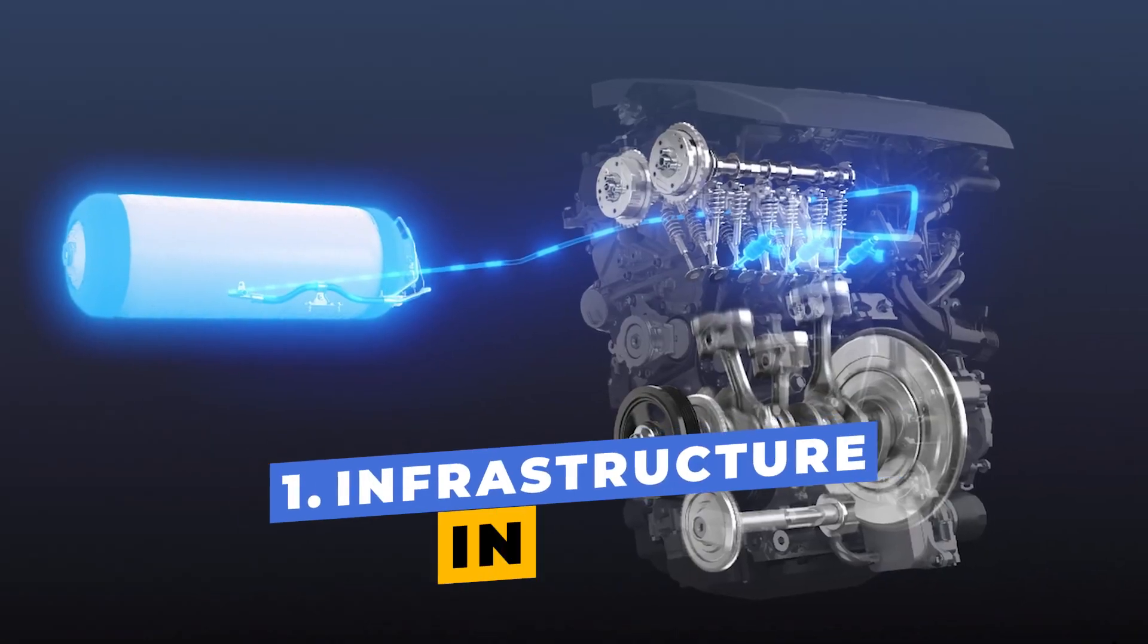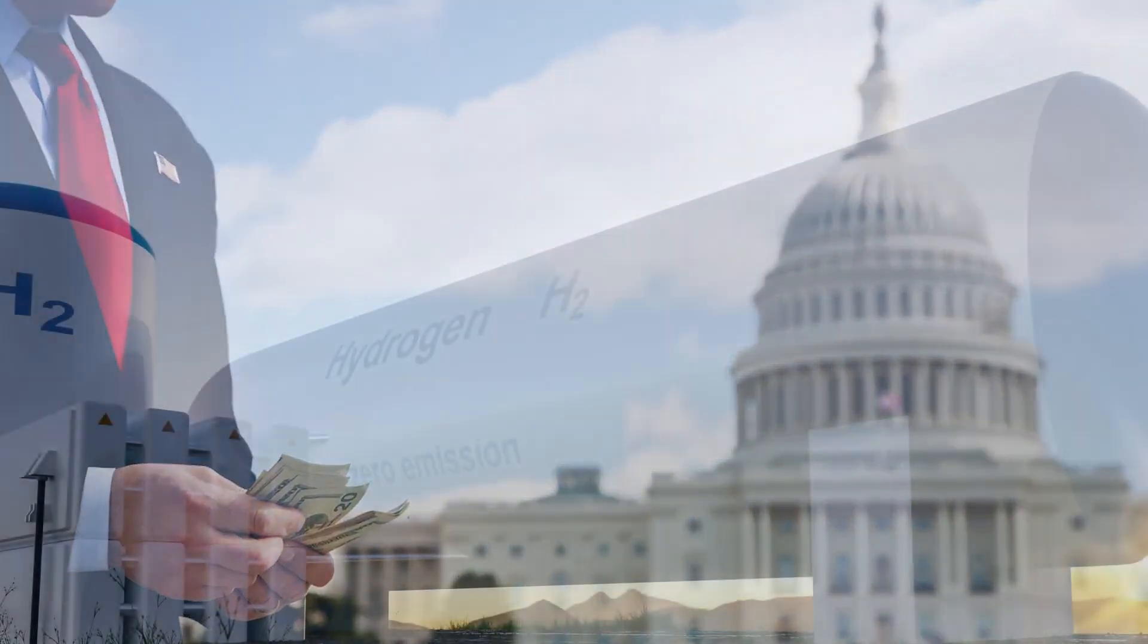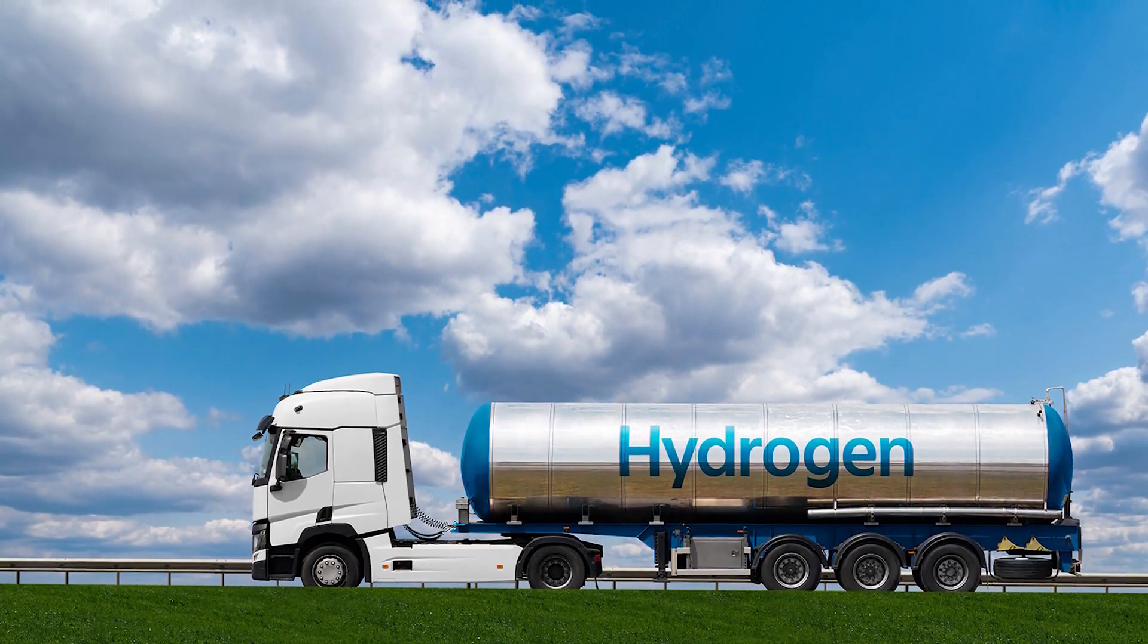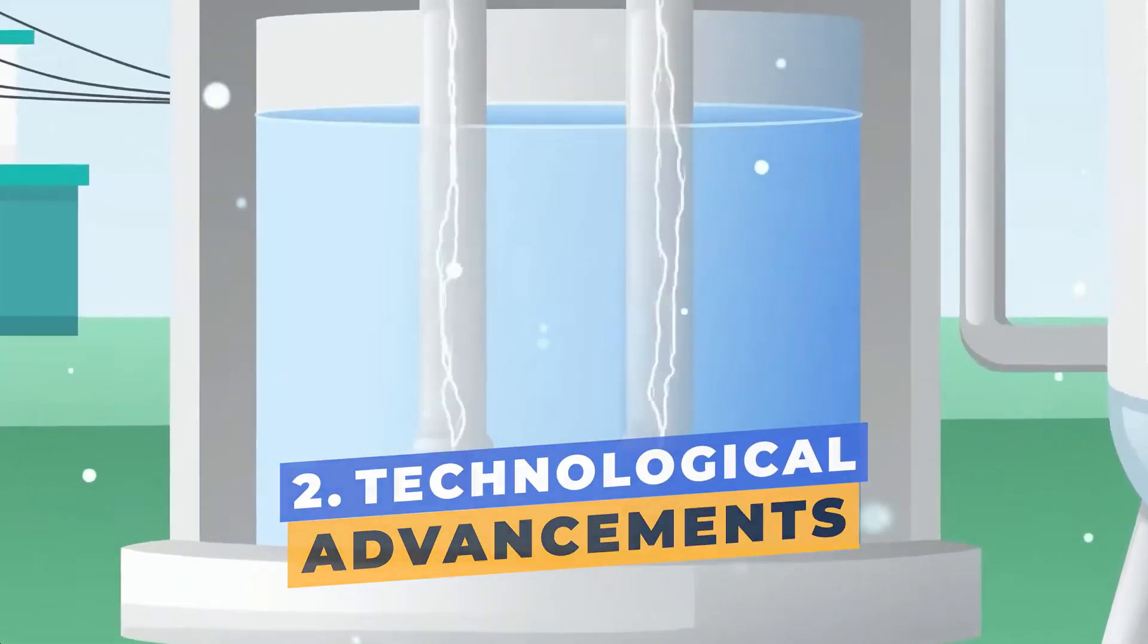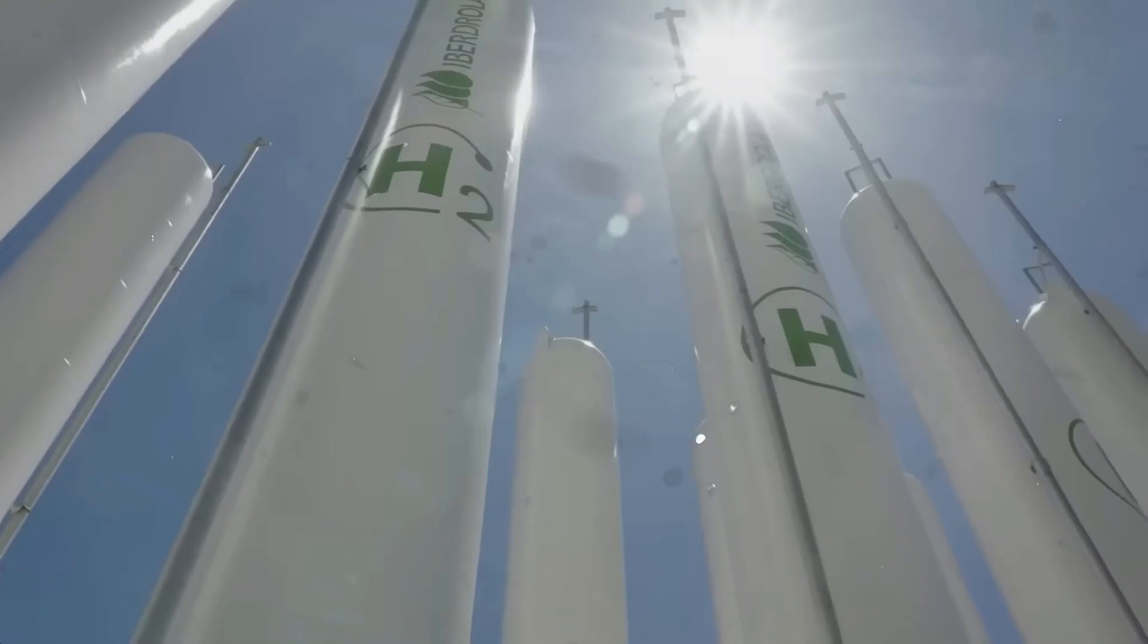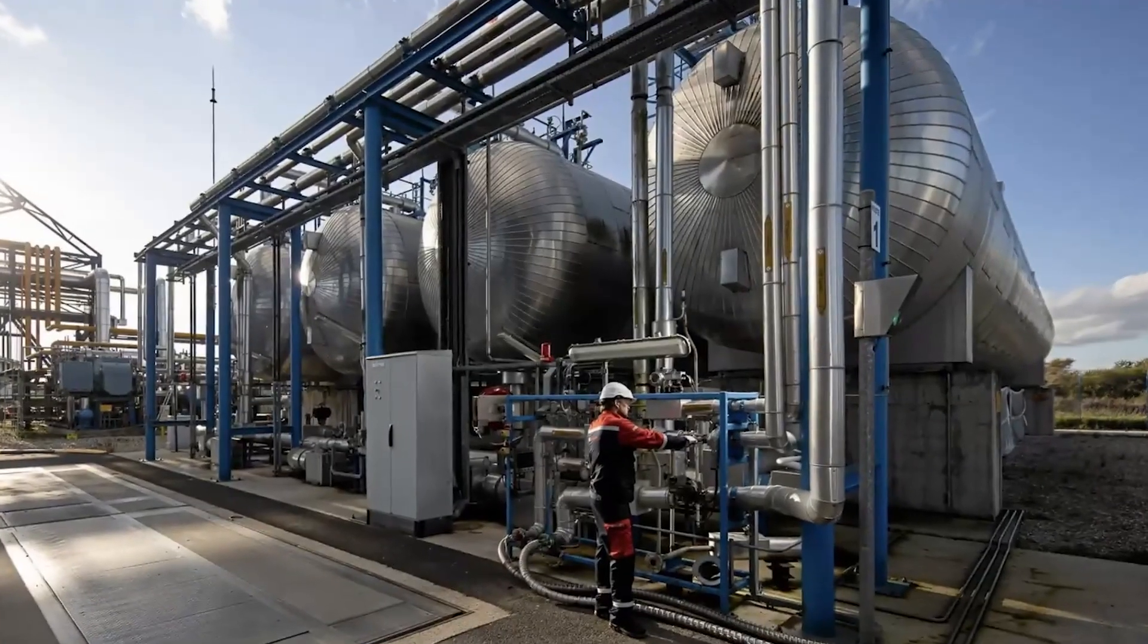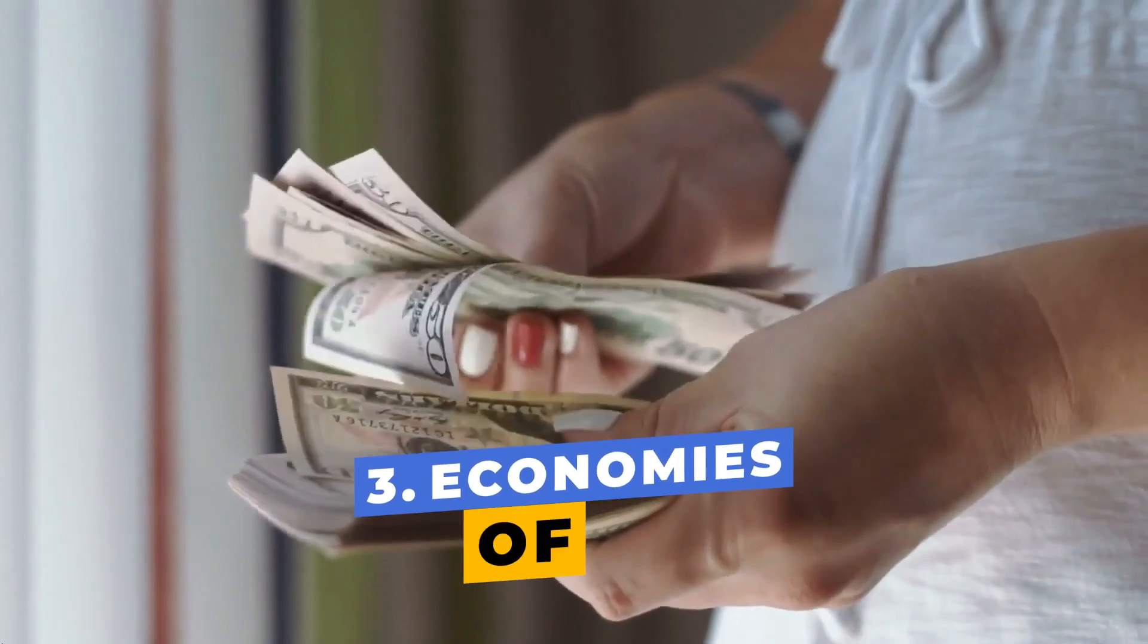First is infrastructure investment. Governments and corporations will need to invest heavily in hydrogen production facilities, refueling stations, and the logistics needed to transport and store hydrogen fuel safely. Then, technological advancements. The efficiency of electrolysis and hydrogen fuel cells must continue to improve. More research and innovation are needed to make the process as energy efficient as possible, using renewable sources for the energy required to produce hydrogen.